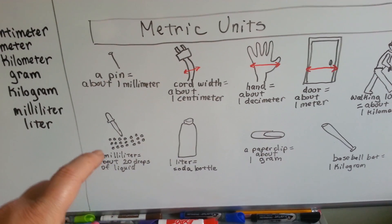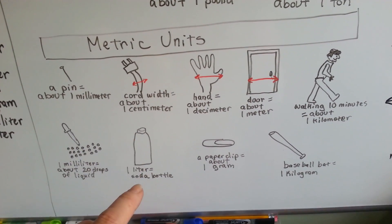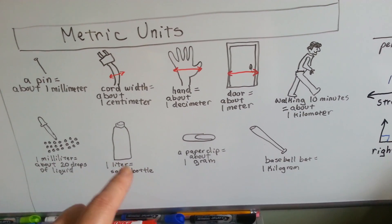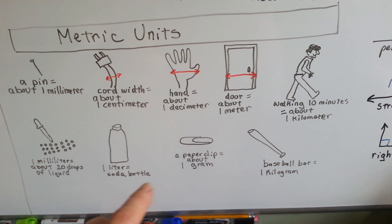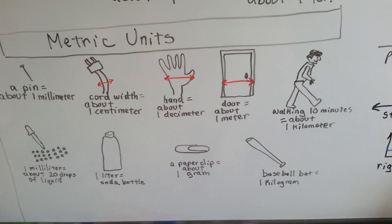A millimeter is about 20 drops of liquid. A liter is like a liter of soda that you would get when you order pizza or go to a food place. A paper clip weighs about one gram, and a baseball bat weighs about one kilogram.